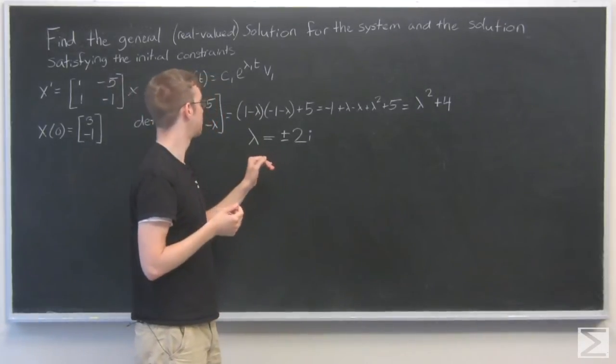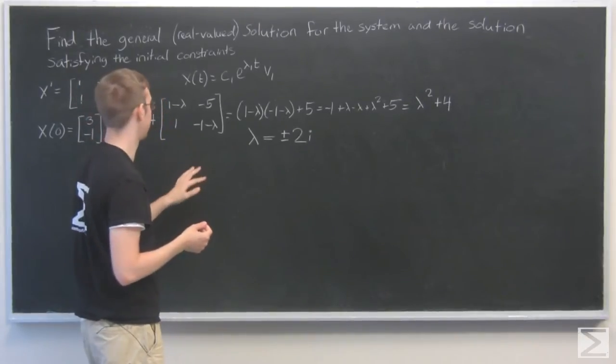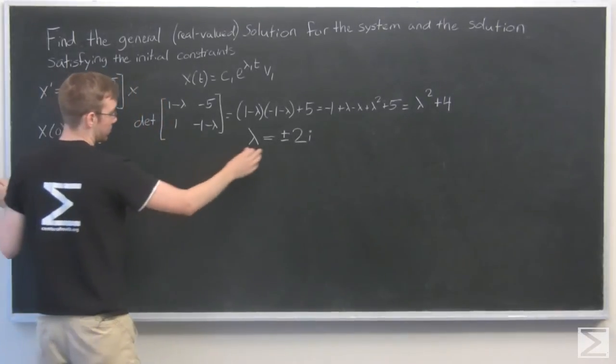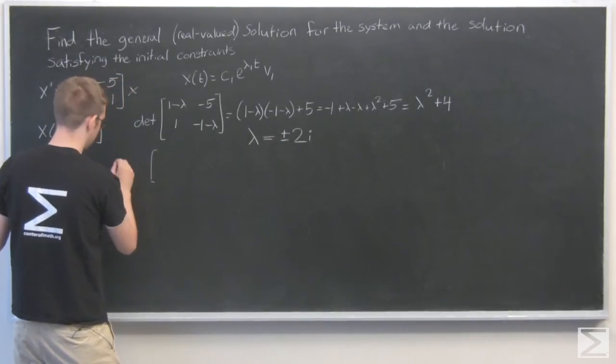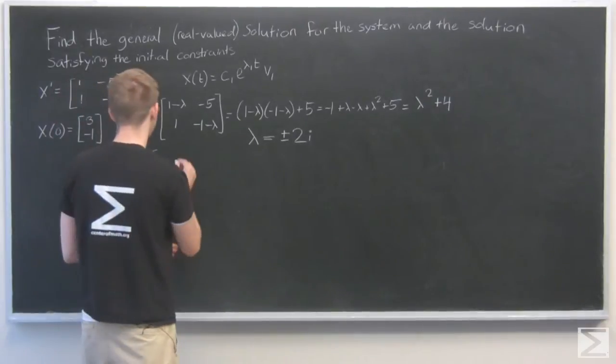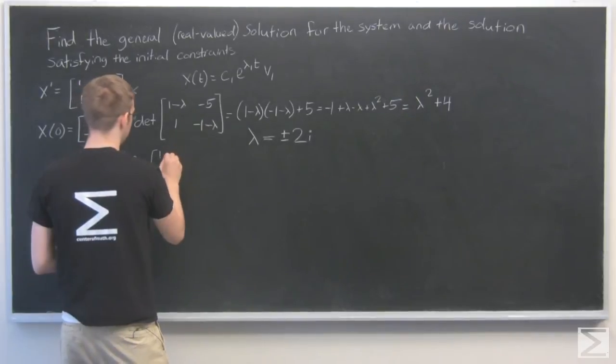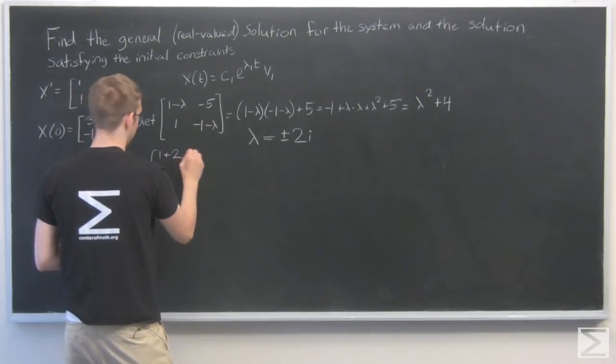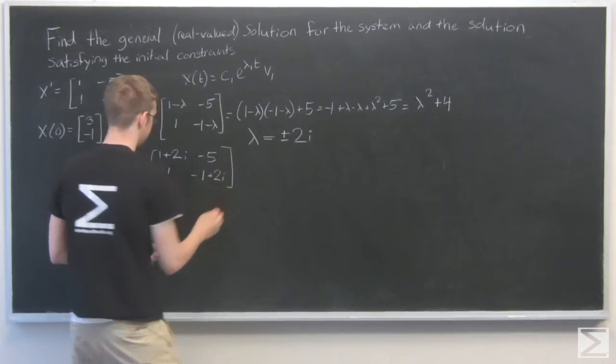So I'm going to choose one of these to put back into this equation to find an eigenvector. And I'm actually going to choose -2i because I think that will give us a nicer answer. So I'm solving for eigenvector 1.